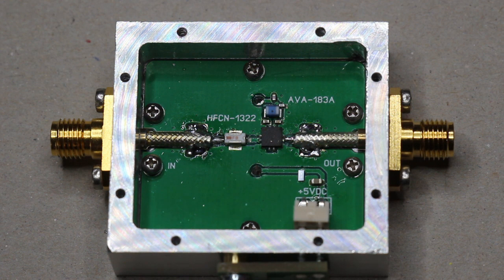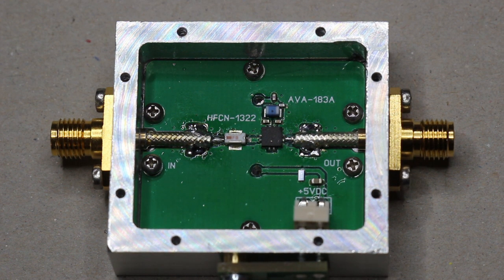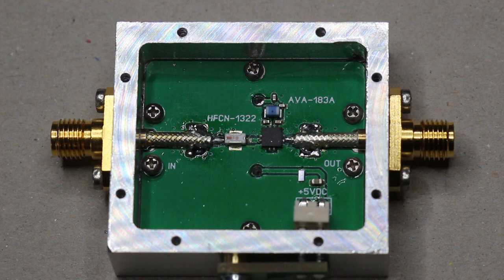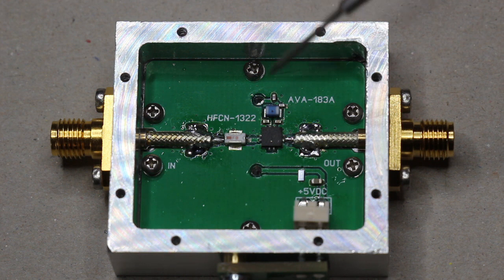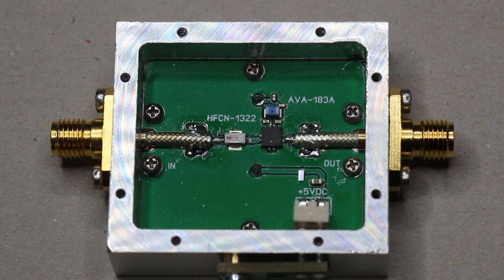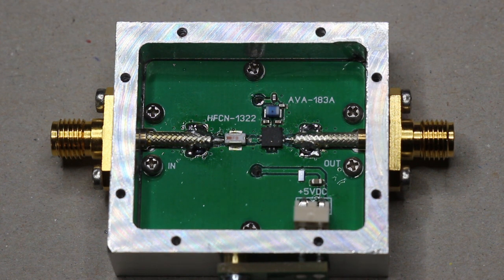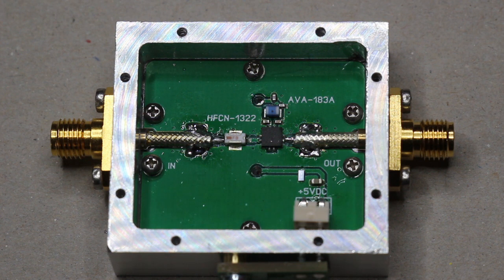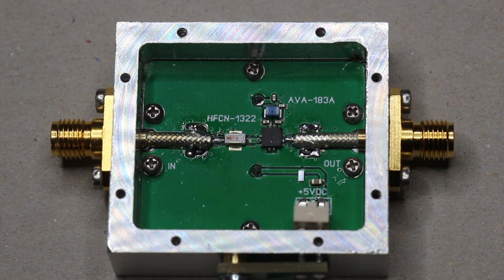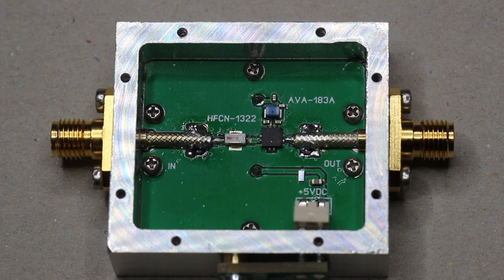Here is the assembled amplifier. It was primarily designed to boost the output level of the 16 gigahertz local oscillator shown in video 27 so it could drive a level 15 mixer. This is a 13.3 gigahertz high-pass filter from Mini Circuits, the HFCN-1322, included in this design to further attenuate the undesired harmonics created in the quadrupler used in the local oscillator.